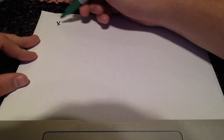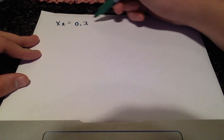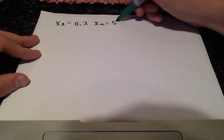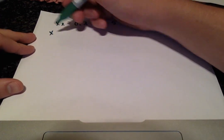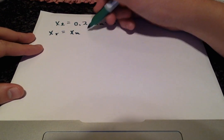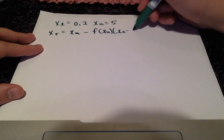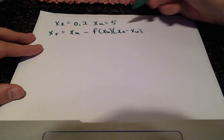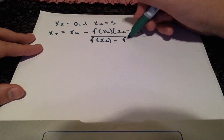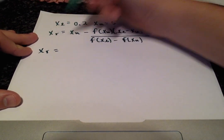So the positive sign told us that x-lower is 0.2 and x-upper is 5. I'll rewrite the equation one more time to calculate x-r: it's x-upper minus f of x-upper times (x-lower minus x-upper), all over f of x-lower minus f of x-upper. And we substitute the appropriate values.